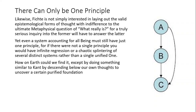Fichte is not simply interested in laying out the valid epistemological forms of thought with indifference to the ultimate metaphysical question of what really is, for a truly serious inquiry into the former will have to answer the latter. Yet even a system accounting for all being must still have just one principle, for if there were not a single principle, you would have infinite regression or a chaotic splintering of several distinct systems rather than a single unified one. How can we find this, except by doing something similar to Kant — descending below our own thoughts to uncover a certain purified foundation which is already there in the background?